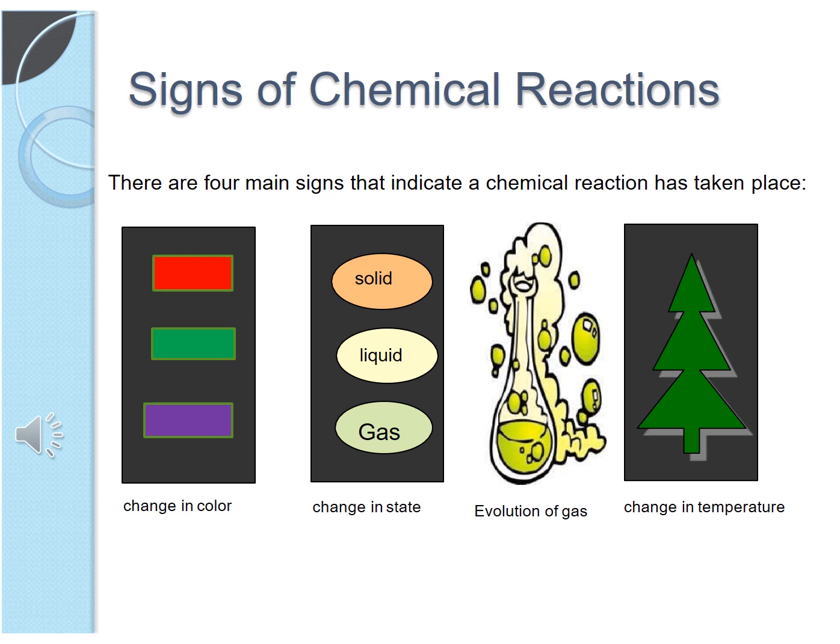Here is summarized form of characteristics of chemical reaction: change in color, change in state, evolution of gas and change in temperature. So basically there are four characteristics of a chemical reaction.